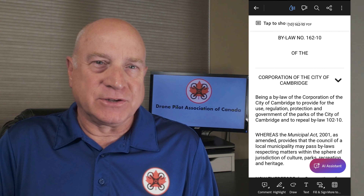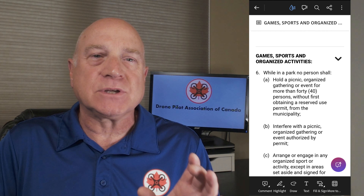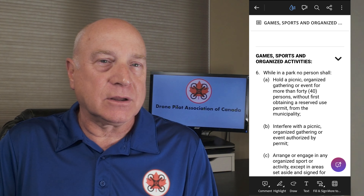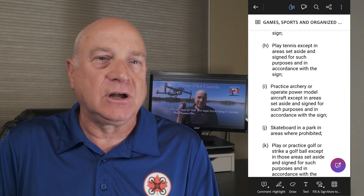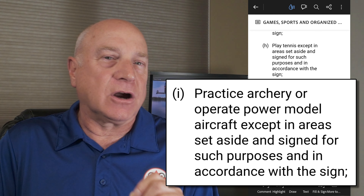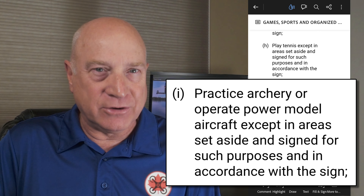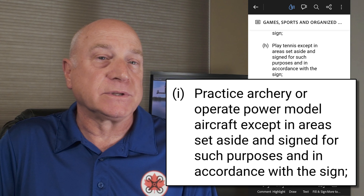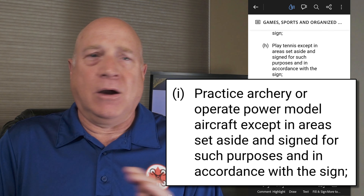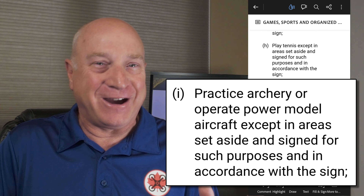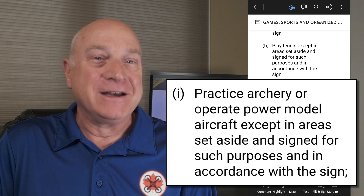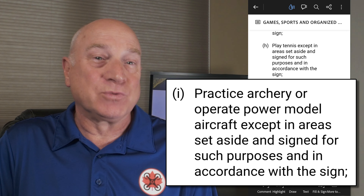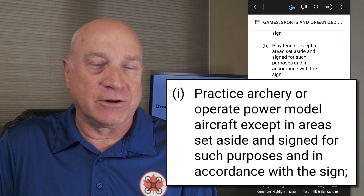Every city's by-laws are different. In Cambridge, it says under games, sports, and organized activities that while in a park, no person shall — then scrolling down to clause I — practice archery or operate power model aircraft except in areas set aside and signed for such purposes and in accordance with the sign. Why archery and model aircraft are lumped together I have no idea, but that's how this particular by-law was constructed. And yes, drones would in fact be interpreted as being model aircraft.